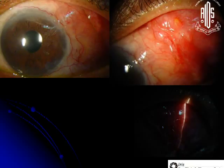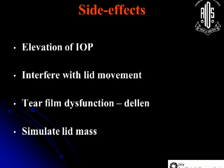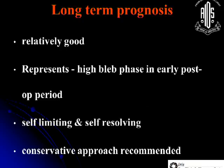In summary, the long-term prognosis of Tenon's cyst is relatively good. It represents the high bleb phase in the early post-operative period. It is self-limiting and usually self-resolving, and hence a conservative approach is usually recommended.